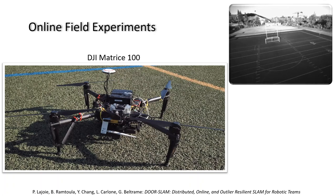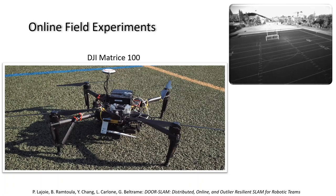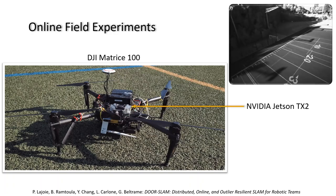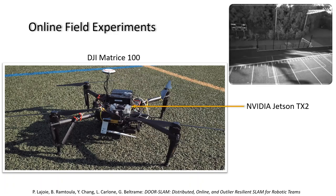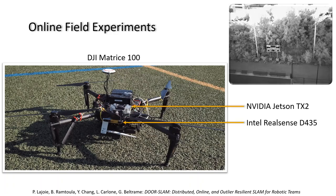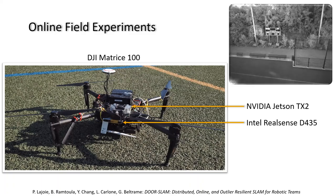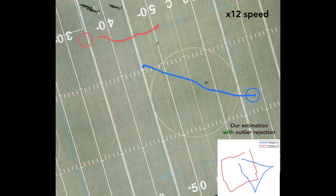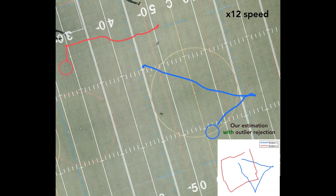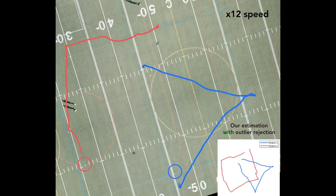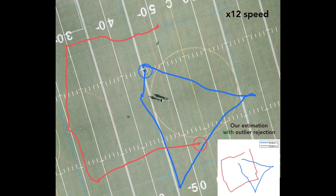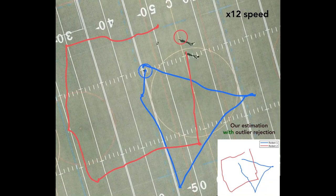Finally, we performed live experiments with DoorSlam on a football field with two DJI Matrice 100 drones, each equipped with a NVIDIA Jetson TX2 and Intel RealSense D435. In this video, you can see the trajectory executed by the two robots and the resulting estimate. Thank you for your attention.